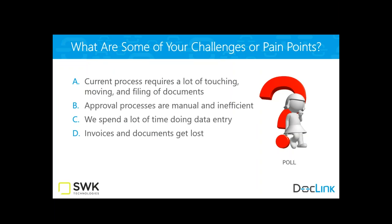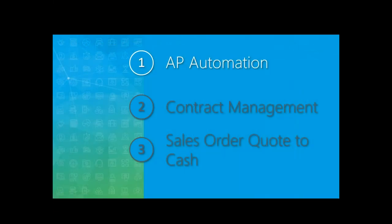Using technology like DocLink to streamline your process, we're going to show you tools to minimize data entry, use workflow instead of walking documents around, route documents automatically, approve them automatically, and have the system file them for you. Today we'll start with AP automation because we find that's the most trouble spot in most organizations: can't find the invoice, always delaying payment because Joe's always delayed in approving, too much time on duplicate data entry, or waiting for the purchase order or receiving document before you can do matching and pay. We'll also show contract management and sales order processing.